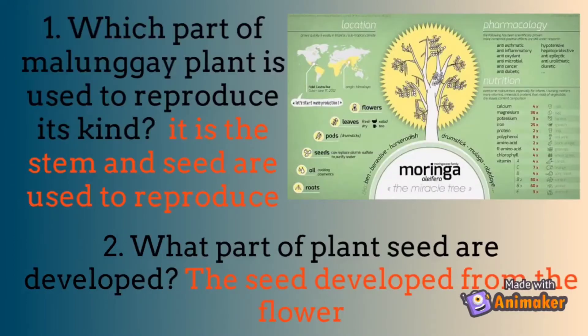Let's answer the questions. Question number one: which part of the malunggay plant is used to reproduce? The stem and seed are used to reproduce. Question number two: what part of the plant are seeds developed from? The seed is developed from the flower.